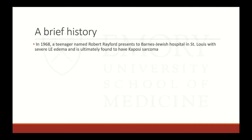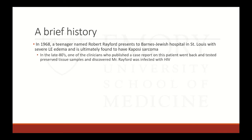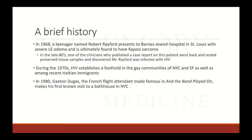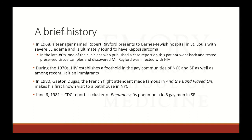In 1968, a teenager named Robert Rayford presented at Barnes-Jewish Hospital in St. Louis with severe lower extremity edema. He was found to have Kaposi sarcoma and passed away. In the late 1980s, a clinician who had published a case report on this in the 60s realized they had preserved tissue samples, went back and tested it, and discovered he was positive for HIV in the United States in 1968. During the 1970s, HIV established a foothold in the gay communities of New York and San Francisco, as well as among Haitian immigrants.